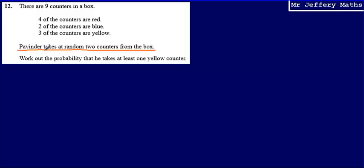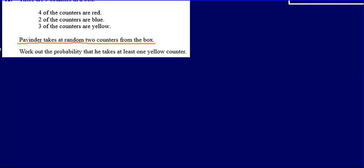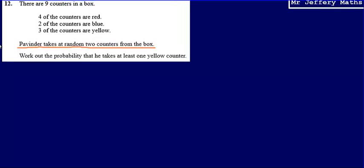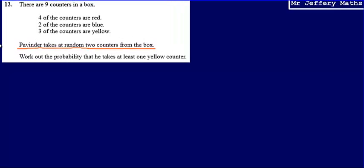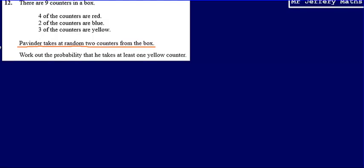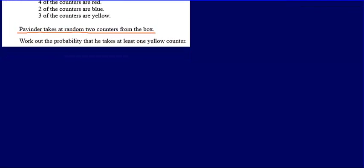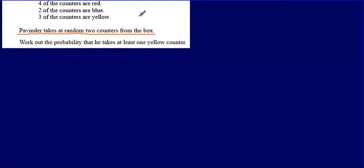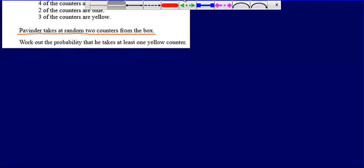This means there are two events. When we have two events in probability, a nice way to think about this is by drawing a tree diagram. So that is what we're going to start by doing.